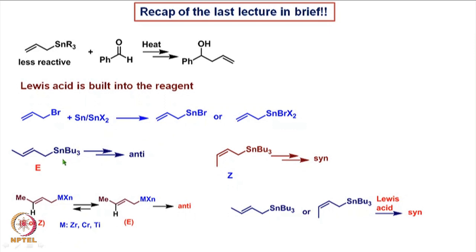We also looked at how crotyl tin molecules with specific geometry of the double bond lead to the formation of anti or syn products. For example, the E-configured crotyl tin compound led to the anti product, and the Z-configured crotyl tin product led to the formation of the syn compound. We also saw that if we take a crotyl compound in which the metal part is zirconium, chromium, or titanium, then irrespective of the geometry of the crotyl double bond, there is an equilibration between the two and eventually it leads to the formation of the E-configured crotyl molecule, which then leads to the anti product.